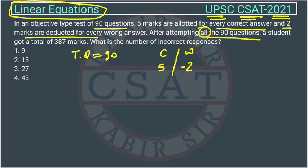This is important - all 90 questions are attempted. A student got a total of 387 marks. What is the number of incorrect responses? So correct plus wrong will equal 90.